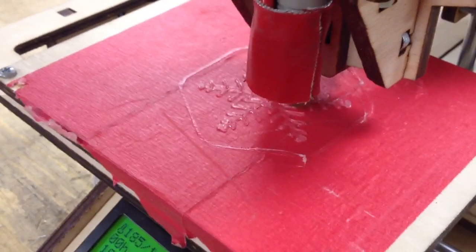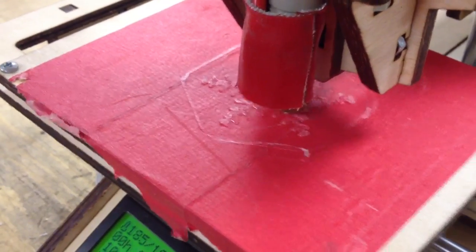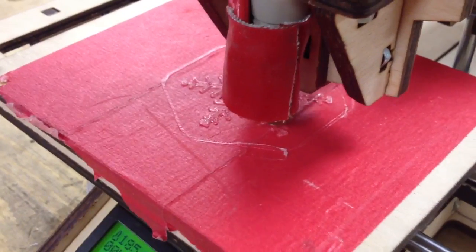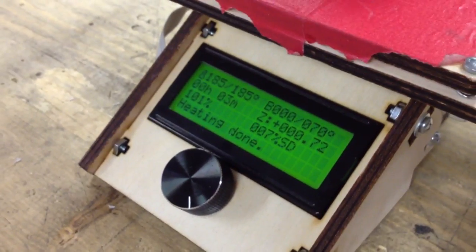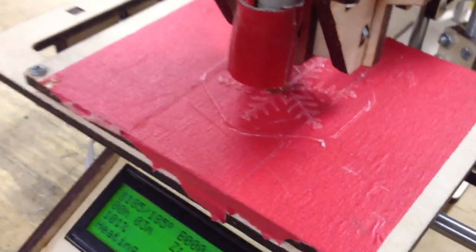This is the Printerbot Junior printing a snowflake, an ornament from my tree, printing in PLA. We happen to have it on the beta LCD screen.